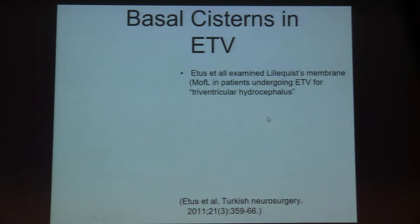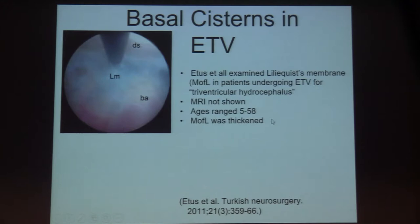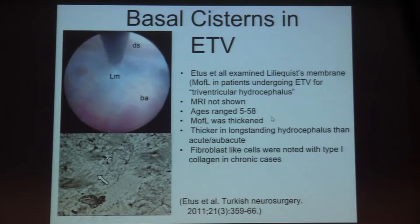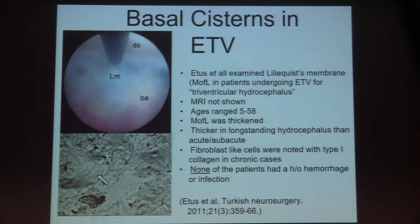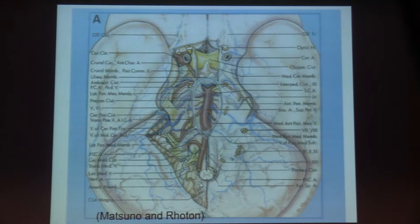In endoscopic third ventriculostomy, it's been reported that patients with thickened membrane of Liliquist did better after ETV, bypassing an obstruction in this area. The study by Etis et al. found fibroblast-like cells in chronic cases. None of these patients had a history of hemorrhage or infection, and yet they had pathologic thickening of the arachnoidal septae in the posterior fossa.